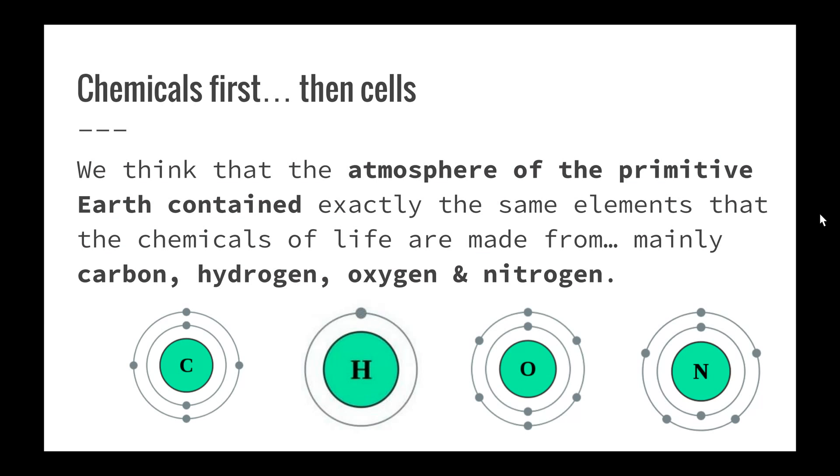So how did the first living things get started on the primitive Earth? The idea was that it was chemicals first, and then cells. We think that the atmosphere of the primitive Earth contained exactly the same elements that the chemicals of life are made from, mainly carbon, hydrogen, oxygen, and nitrogen.